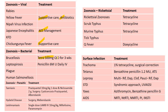Chikungunya fever: supportive care. Brucellosis: tetracycline 500 mg QID for three weeks. Leptospirosis: penicillin 6 million units daily IV. Taeniasis: praziquantel 10 mg per kilogram single dose, or niclosamide 2 g single dose. Surgery should be done if there is pressure in the brain or abdomen. Cysticercosis: praziquantel and albendazole. Hydatid disease: surgery is the treatment of choice; mebendazole also plays a role.